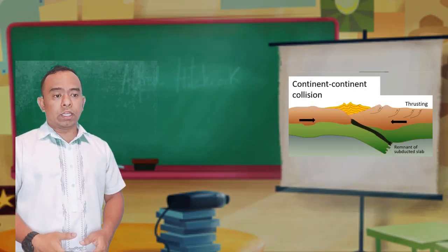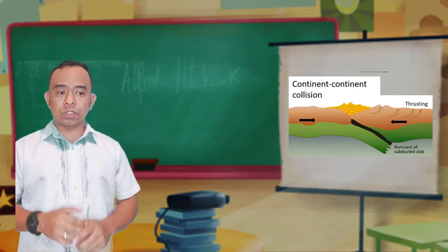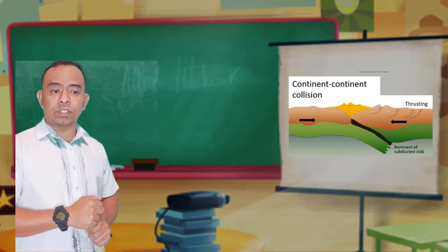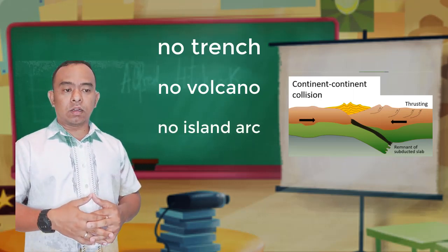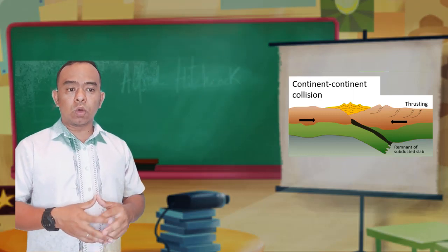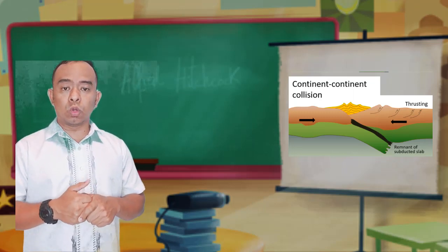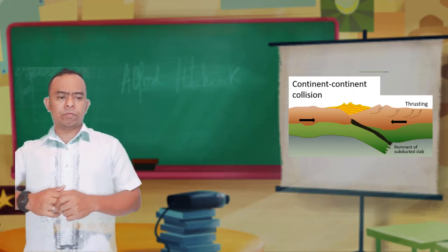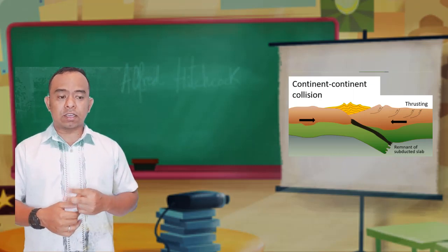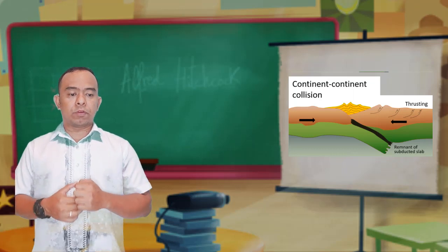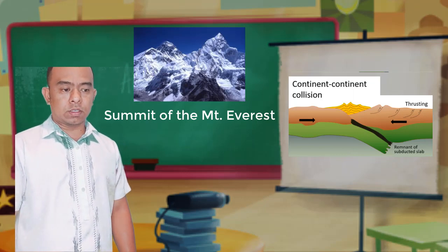When two continental plates converge, a collision zone is formed. Subduction ceases for this particular type of convergence — no trench, no volcano, and definitely no island arc are created during this process. Instead, what is created is a large group of tall mountains called a Mountain Range. About 40 to 50 million years ago, two large land masses, India and Eurasia, collided to begin the formation of the most visible product of plate tectonics, the Himalayas.